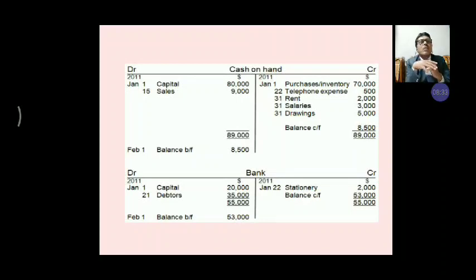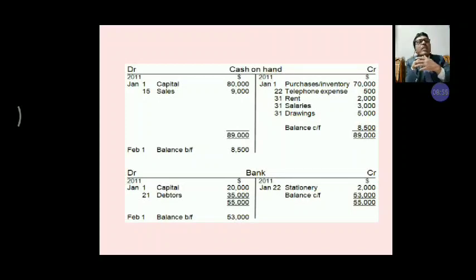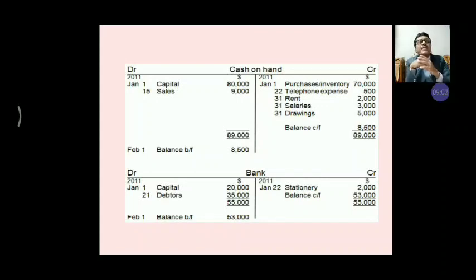Now, the bank account. On the debit side, deposited into bank Rs. 20,000 by way of capital. And collection received from debtors Rs. 35,000 — so total Rs. 55,000 in the bank account. On the credit side, how many Rs. spent by bank? Only stationery amount has been paid by bank or by cheque — Rs. 2,000. So the bank balance is Rs. 53,000.